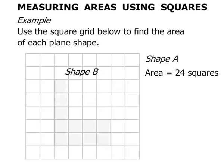Shape B. This time an L shape. Let's find the area by counting squares. 1, 2, 3, 4, 5, 6, 7, 8, 9, 10, 11.